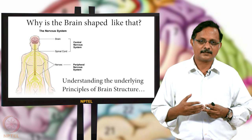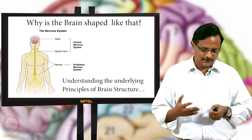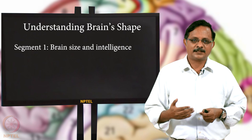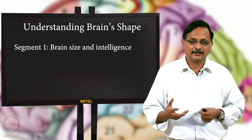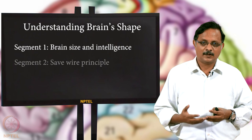In this lecture we will try to understand the structural principles of the brain. We will ask what are the evolutionary forces that shaped the brain and made it the way it is today. There are 3 segments. In the first, we will see if there is any correlation between brain size and intelligence — what structural properties make it so intelligent.